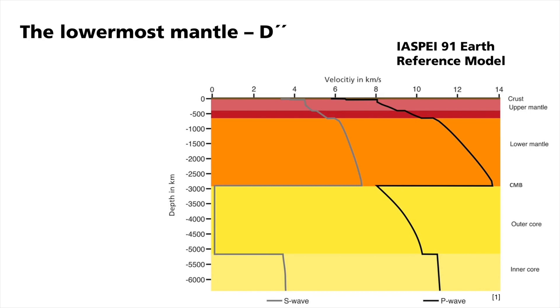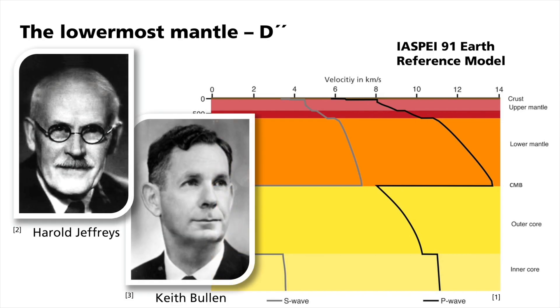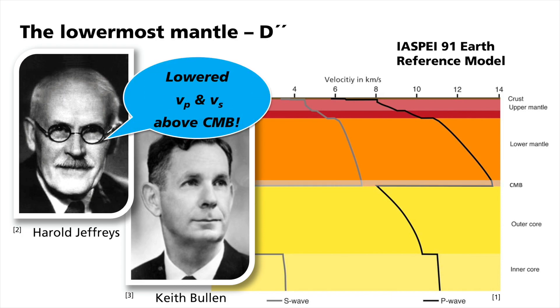Since the beginning of the 20th century, seismologists have used travel time curves of earthquakes worldwide to refine the global model of the Earth. Harold Jeffries and his PhD student Keith Edward Bullen were two of them. Jeffries observed in 1939 that P and S wave velocities decrease at the very bottom of the lower mantle.